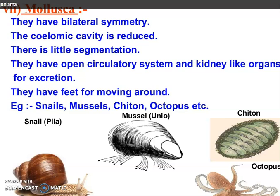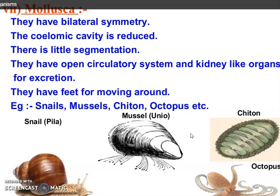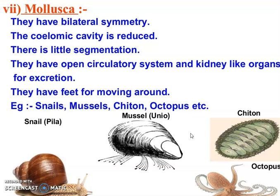Next phylum is Mollusca. They have soft, unsegmented body with an outer hard shell. Their body is bilaterally symmetrical and their coelomic cavity is reduced. They have only a little segmentation. They have an open type of circulatory system. They have special organs for excretion. For example, snails, mussels, chitons, and octopus.